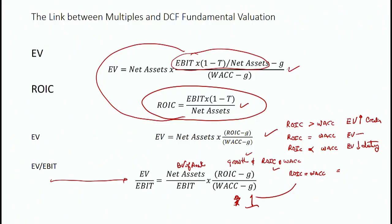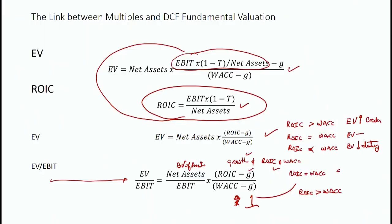So what's key here is not only growth, but you also have to have return on invested capital being greater than the weighted average cost of capital in order for the enterprise value to EBIT multiple to be higher. It requires both of those things, not just growth.